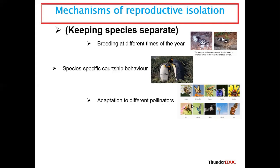Number three is adaptation to different pollinating agents or pollinators. You have different insects — one is a butterfly, another is a different insect — and also birds and humans as pollinators. Because different plants are adapted to different pollinators, if the specific pollinator cannot come, then pollination will not occur and the plant will not reproduce, so they are being isolated or separated.